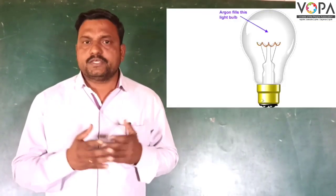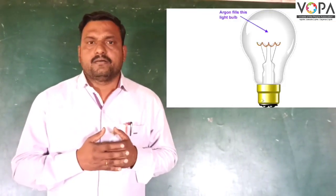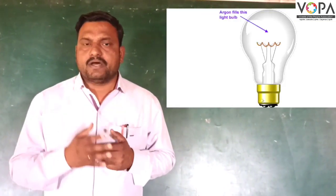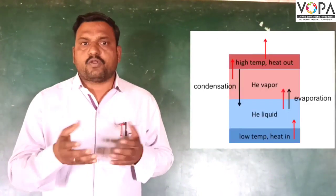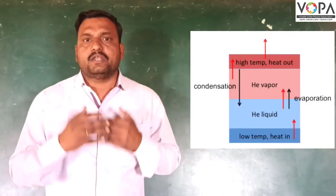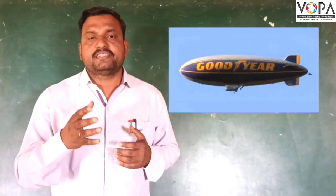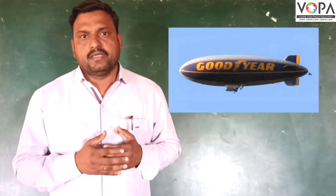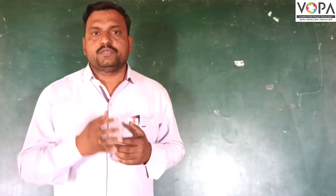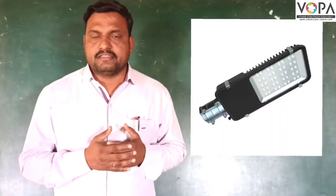Argon is used for electric bulbs. Helium is used for obtaining low temperatures, and it is also used for generating lift in airships. Neon is used for decorative lights and street lights.